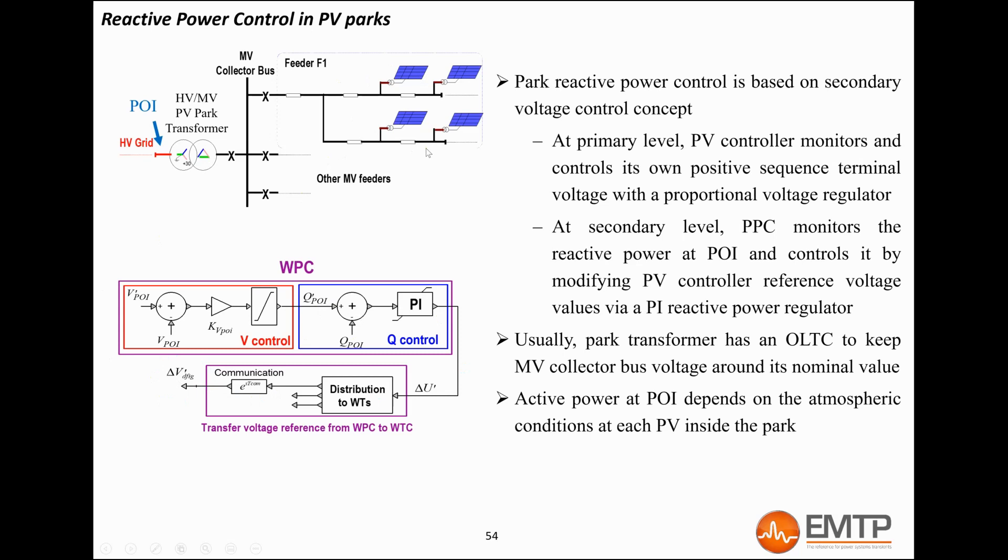By default, controllers control the voltage to one per unit. If the PPC commands more reactive power, it sends a positive voltage deviation reference and the converters end up producing more reactive power.